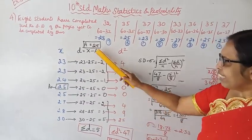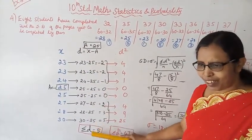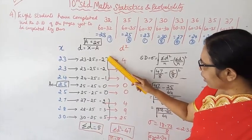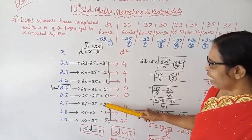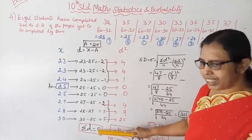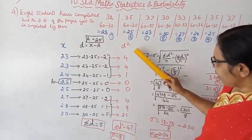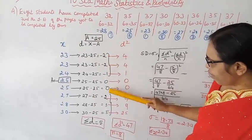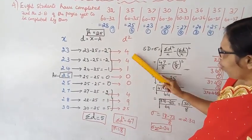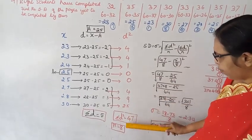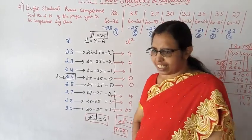Now d squared values: (−2)² = 4, (−2)² = 4, (−1)² = 1, 0² = 0, 0² = 0, 2² = 4, 3² = 9, 5² = 25. Sigma d: −2 −2 −1 + 0 + 0 + 2 + 3 + 5 = 5. Sigma d squared: 4 + 4 + 1 + 0 + 0 + 4 + 9 + 25 = 47.